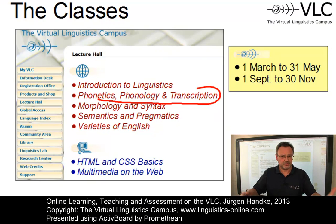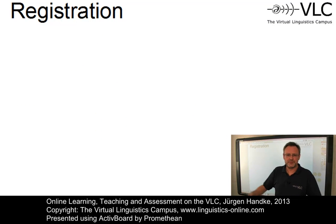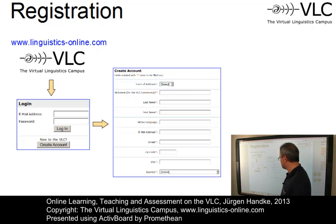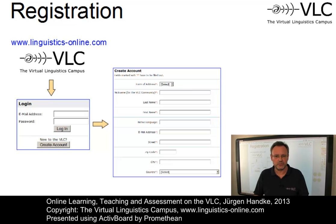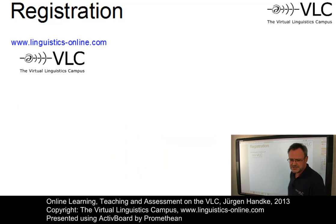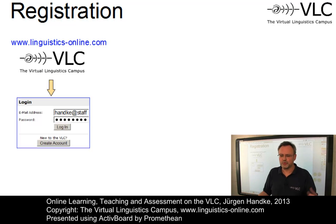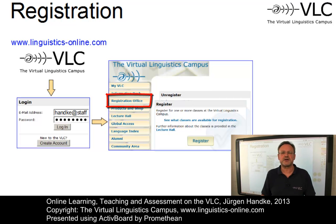Before we start, we have to register. Registration is really simple. You first load the VLC homepage, www.linguistics-online.com, and once you are there you can create your free account. All you have to do is click on the button 'create account'. Then an interactive form will be displayed where you have to add your personal details including a password of your choice. After your account has been created, log in with your personal data. Then you can go to the VLC Registration Office, where you can register for one or several classes via a few mouse clicks.